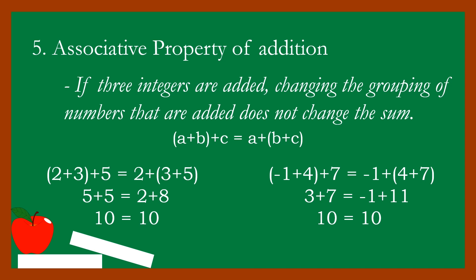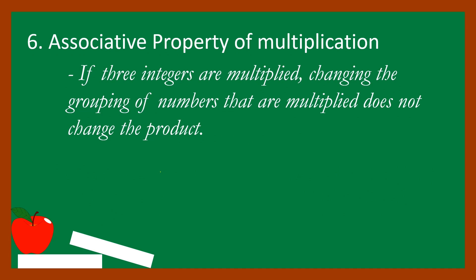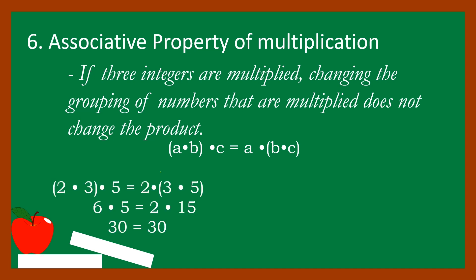Property number six: the associative property of multiplication. If three integers are multiplied, changing the grouping does not change the product. The notation is: the product of (a times b) times c is equal to a times the product of (b times c). For example, the product of (two times three) times five is equal to two times the product of (three times five).